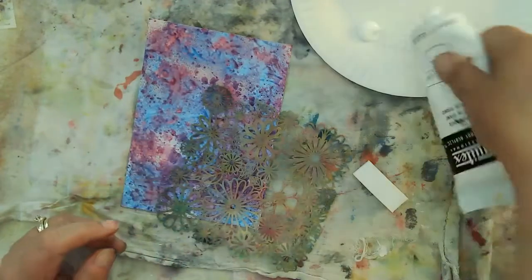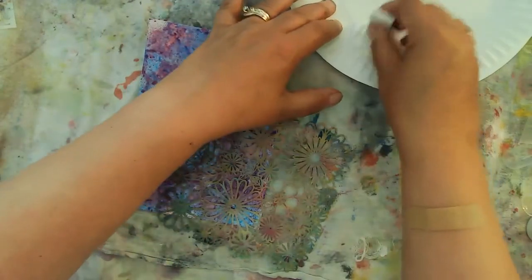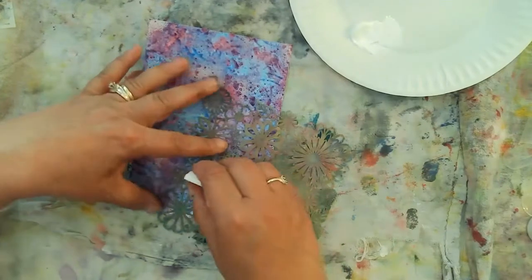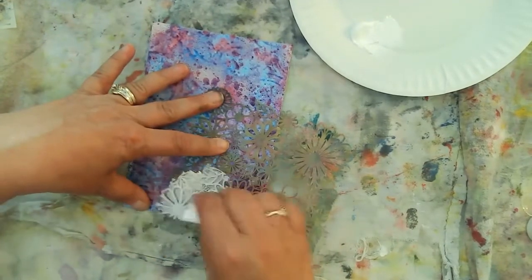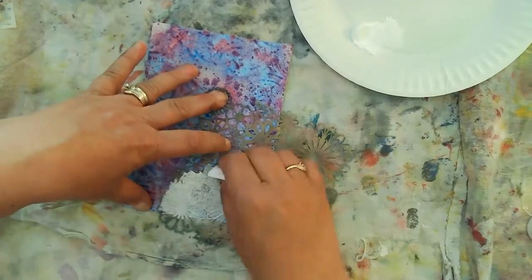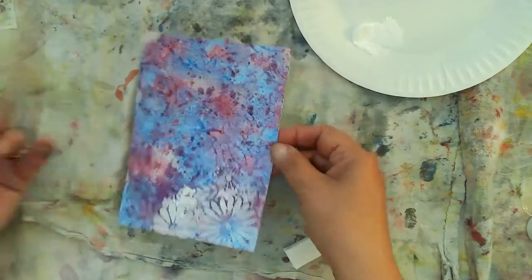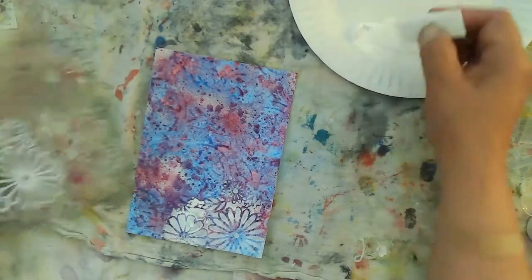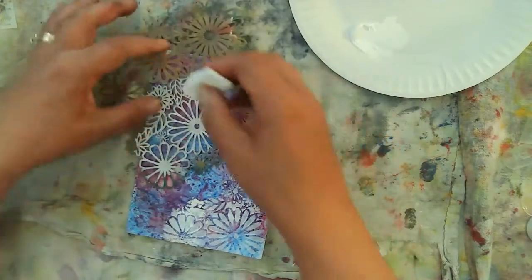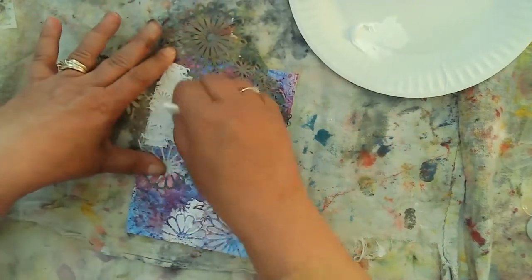So I decided to go ahead and use my titanium white, I believe it's Golden paint, and using this flower stencil to go ahead and create some design on this piece. So I go up here at the lower right-hand corner, the upper left-hand corner, and then just a bit on the right-hand side.